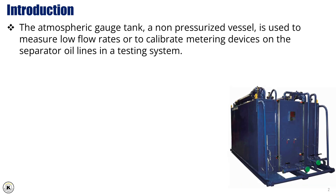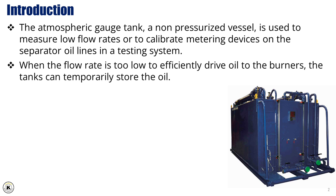The atmospheric gauge tank, a non-pressurized vessel, is used to measure low flow rates or to calibrate metering devices on the separator oil lines in a testing system. When the flow rate is too low to efficiently drive oil to the burners, the tanks can temporarily store the oil.